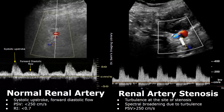Here is a case of renal artery stenosis. We will find turbulence at the site of stenosis, which will cause spectral broadening in the waveform. The peak systolic velocity will be greater than 250 centimeters per second.